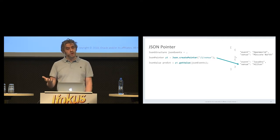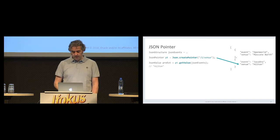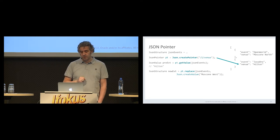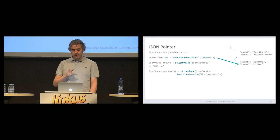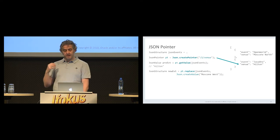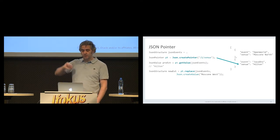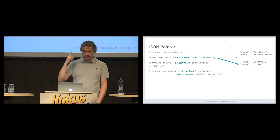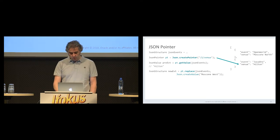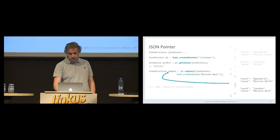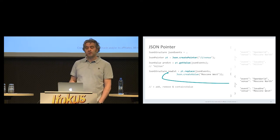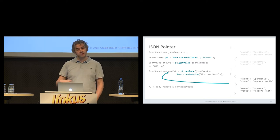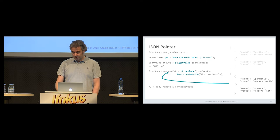We have multiple operations we can use: getValue is one — in this case it would return 'Hilton'. Replace is another operation. The key thing is that the JSON-P API is an immutable API, so if you do a replace, what you get in return is a new object — you will not change the original. We have getValue, replace, add, remove, and containsValue operations with JSON Pointer — a very easy-to-use API for dealing with JSON documents.